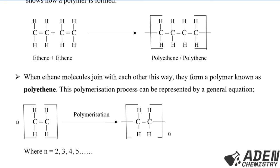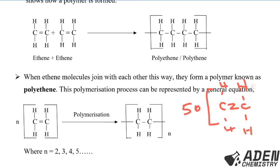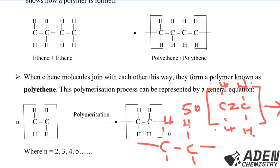For example, to draw the polymerization for 50 monomers of ethene, we write 50, then the ethene structural formula in brackets. Through the polymerization process we remove the double bond, place the four hydrogen atoms — two up and two down — close the bracket, and write 50 as the subscript. This gives the polyethene formed from 50 monomers of ethene.